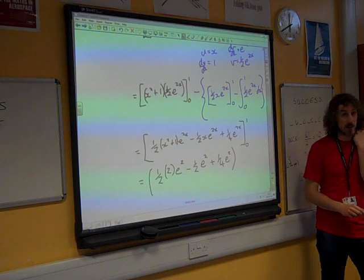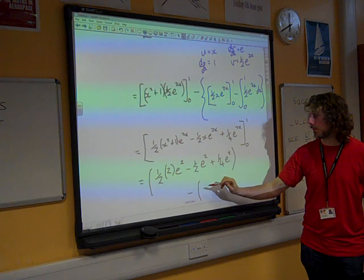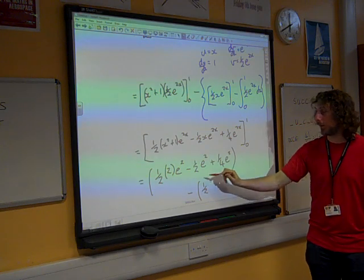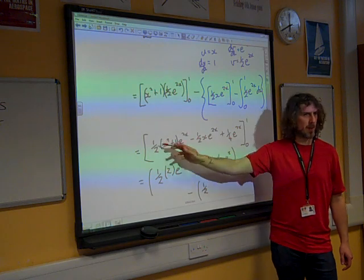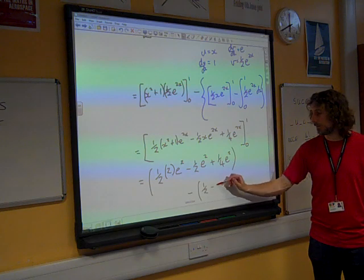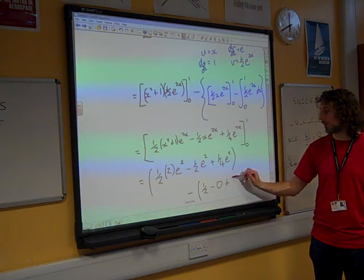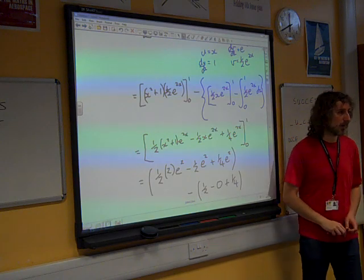And then if we sub 0 in, we're taking away, now that would be a half times 1 times e to the 0. So that first here is just a half, isn't it? Half times 1 times 1. And then that would be 0, and then that would be a quarter.